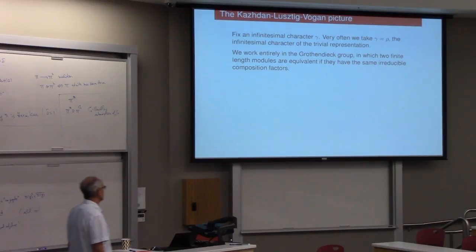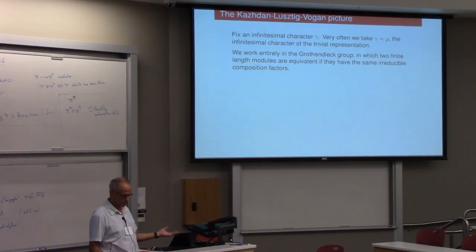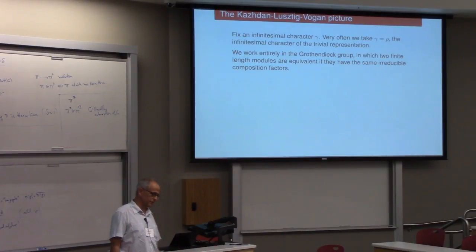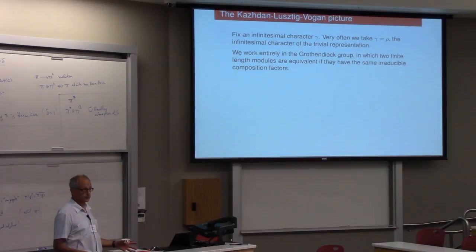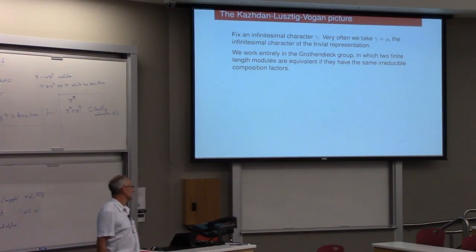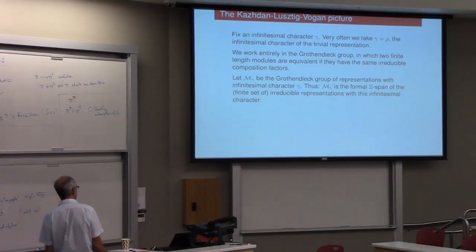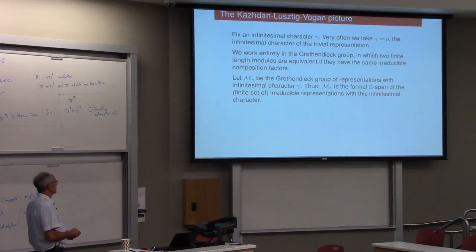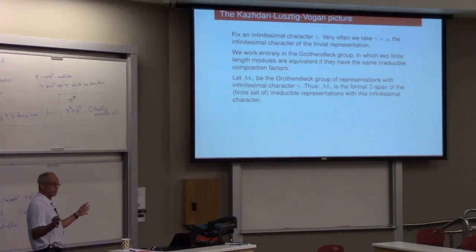We're going to work entirely in the Grothendieck group. And I'm not going to try and define that precisely, but it's basically just, you have modules which are not necessarily irreducible, but they have finite composition series. And you ignore the, you pretend that everything's semi-simple. The only thing that matters is the composition factors. It doesn't matter what order they're in. Subs or quotients or whatever. You just look, you say two modules are equivalent if they have the same irreducible composition factors. So that's the Grothendieck group. And so basically, the way I think, one way to think of the Grothendieck group is it's a Z module. And it's the, whoops, it's the formal Z-span of the set of irreducible representations with this infinitesimal character. Just a formal Z module.